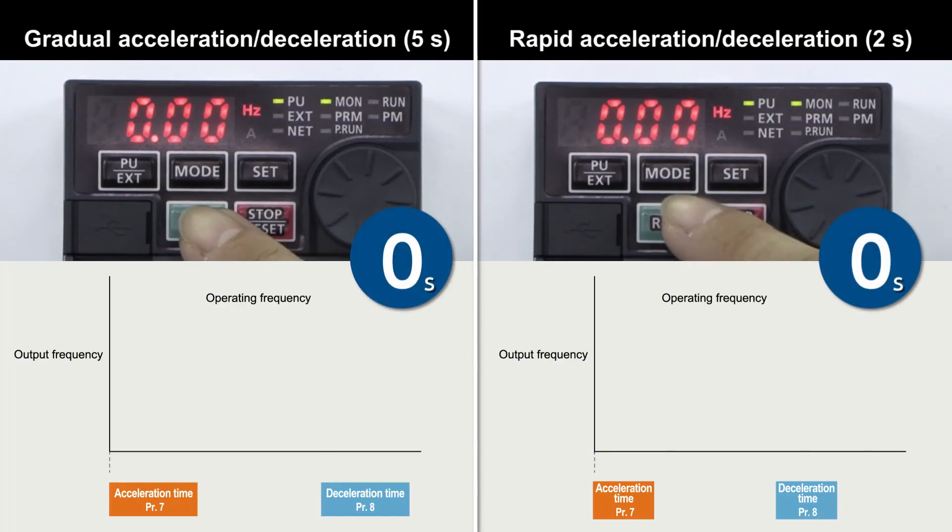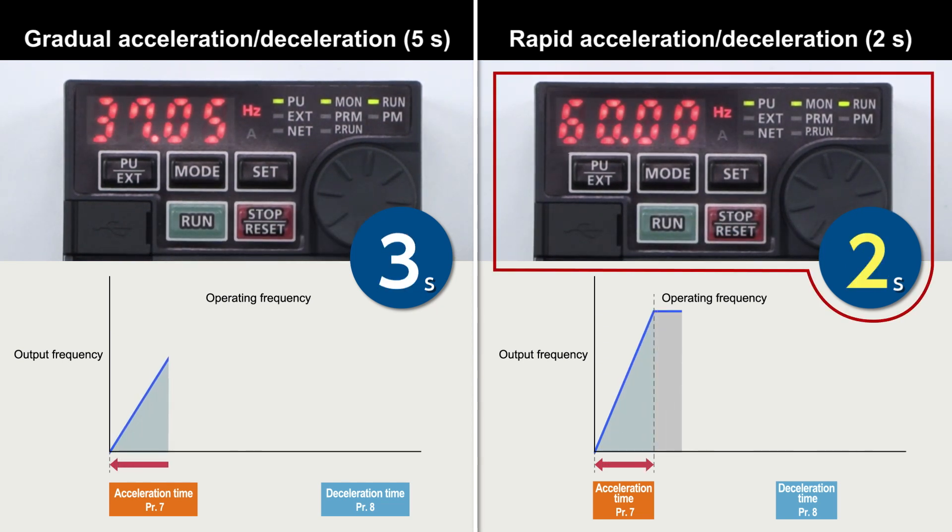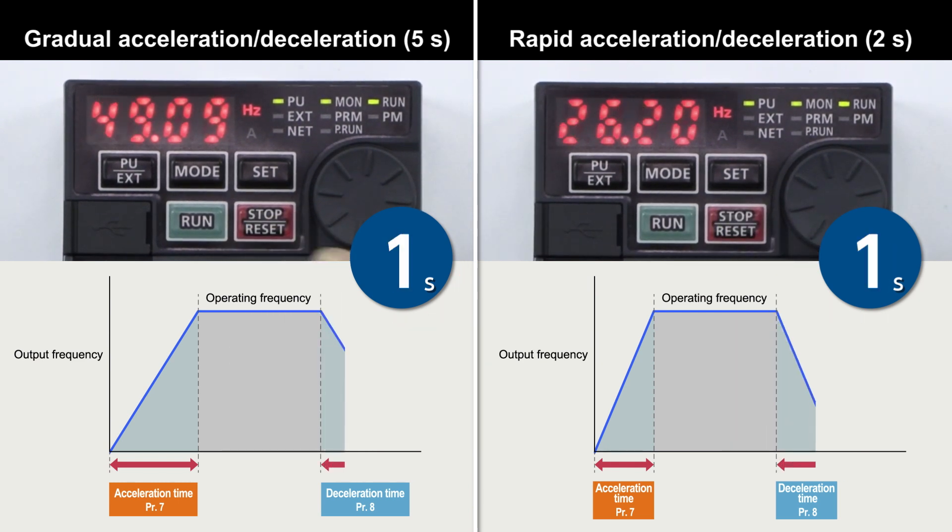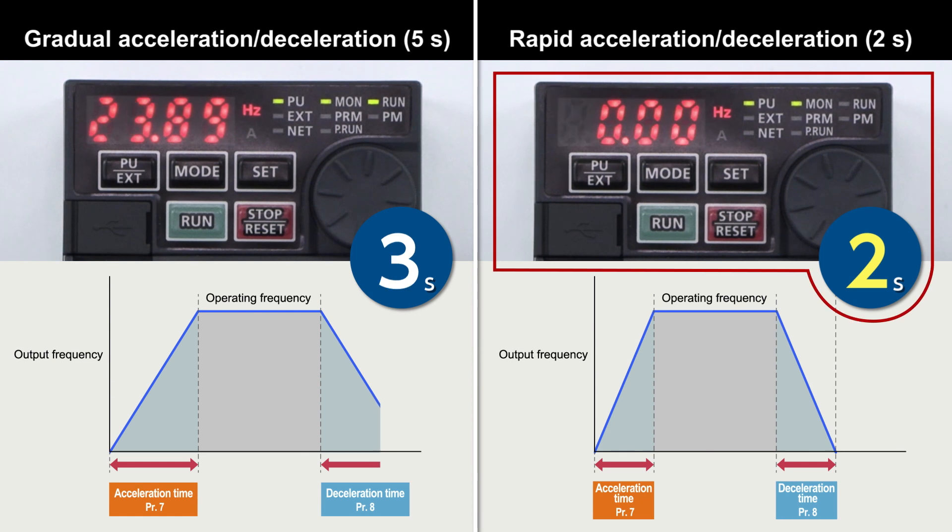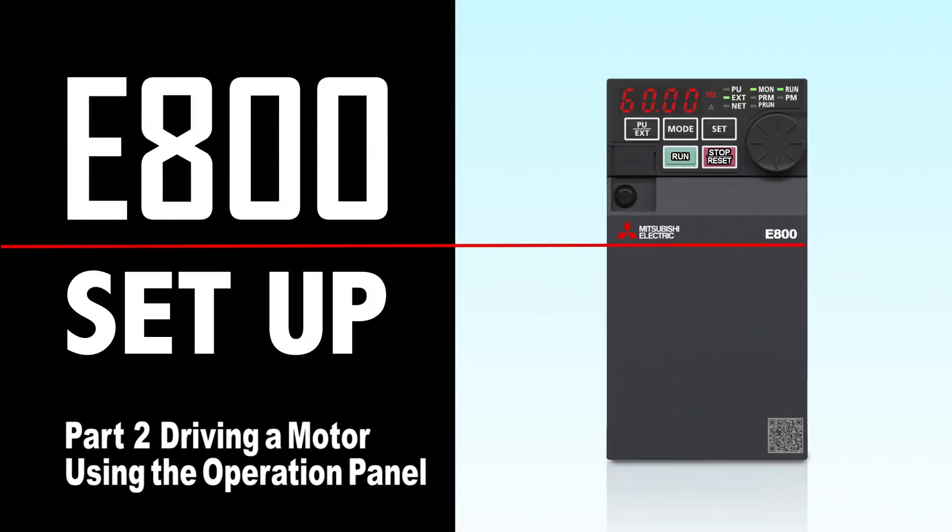This setting adjusts the acceleration and deceleration times by lengthening the time for gradual acceleration or deceleration, or shortening the time for rapid acceleration or deceleration. This completes the instructions for setting acceleration and deceleration times.